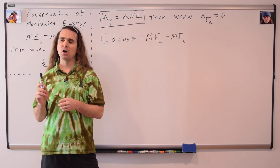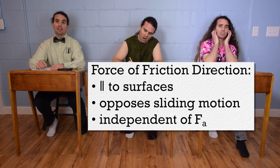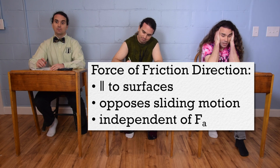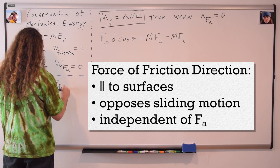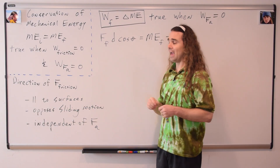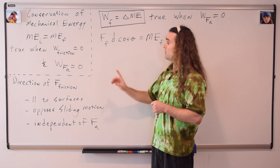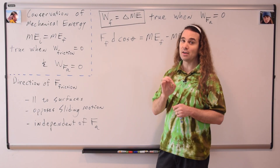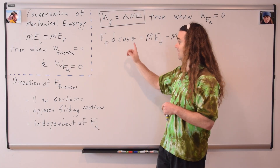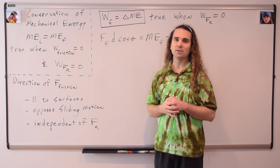Remind me, Bo, what are the three things I asked you to remember about the direction of the force of friction? The force of friction is always parallel to the surfaces, opposes sliding motion, and is independent of the direction of the force applied. And the angle in the work due to friction equation is the angle between the direction of the force of friction and the direction of the displacement of the object. Therefore, the angle theta in your work due to friction equation is always 180 degrees.